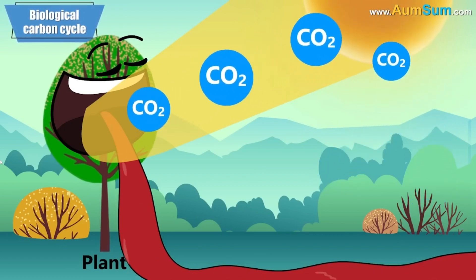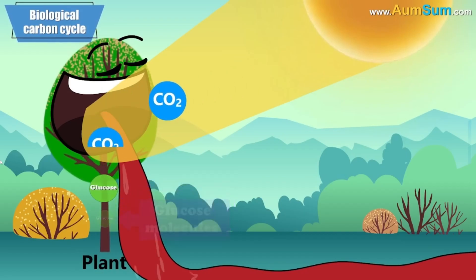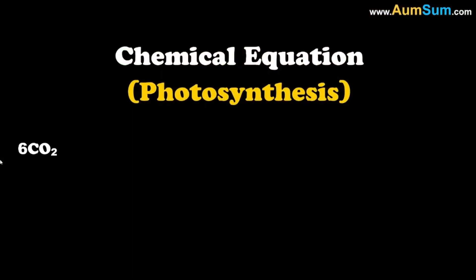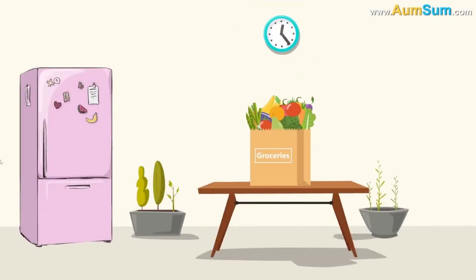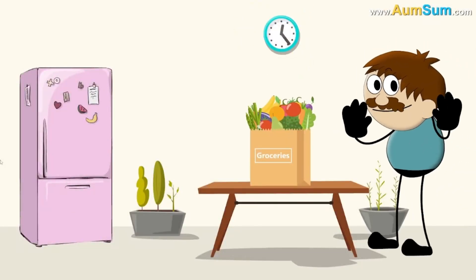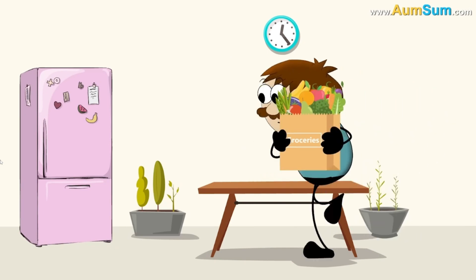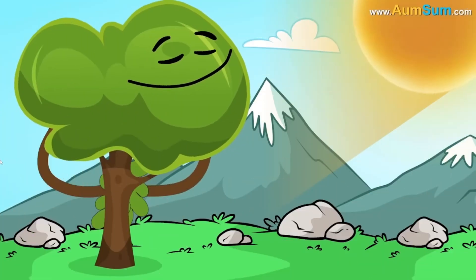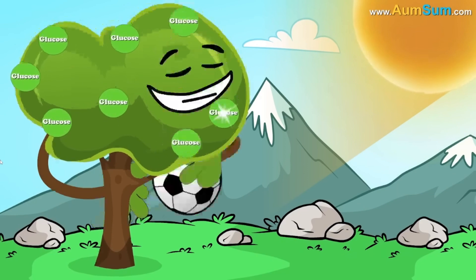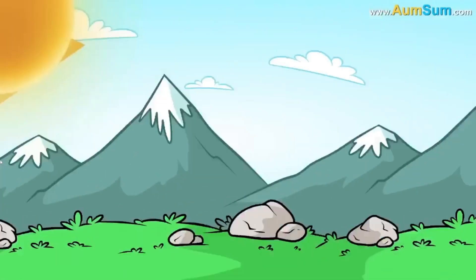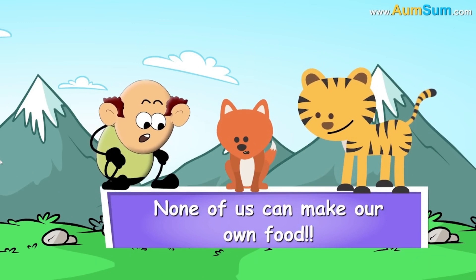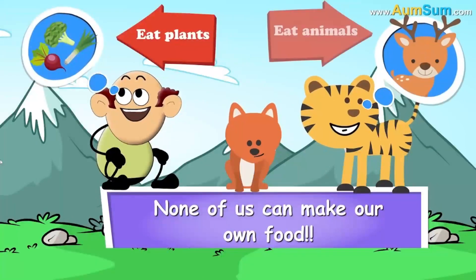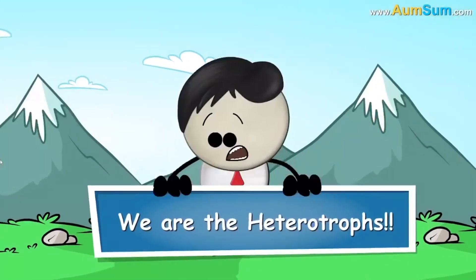This carbon dioxide is then converted into glucose molecules. The glucose formed is used up by the plant for its activities or stored for future use. Now, what about us, or even dogs, tigers, etc.? None of us can make our own food. So we either eat plants or other animals to survive. We are the heterotrophs.